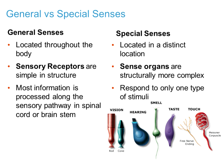Our Special Senses, to compare, are located in one — maybe two, because you have two eyes, two ears — one distinct location. You have specialized, very unique types of cell or receptor cell configurations that are going to respond to a single type of stimulus and only that one type of stimulus.